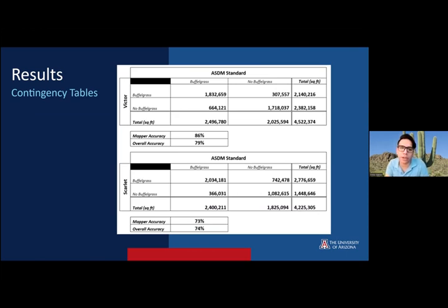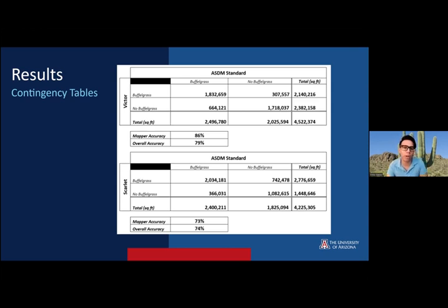Here you're seeing Scarlett's and my data. Most of our features were measured in square feet based on the projected coordinate system we used. Most importantly, the mapper accuracy shows the percentage values at what point and how much buffelgrass each user identified versus the standard. For overall accuracy, how much did we agree on the presence and absence of buffelgrass within the study area as a complement to each other — showing how we used our different mapping styles to find buffelgrass.